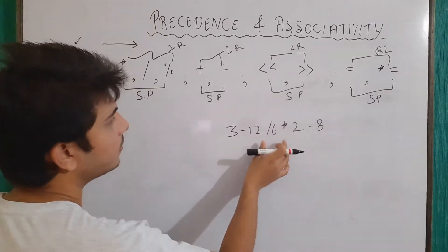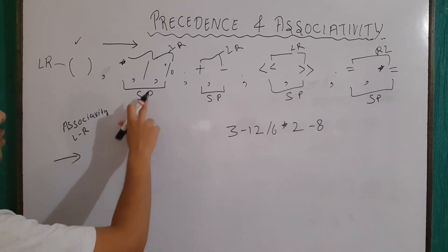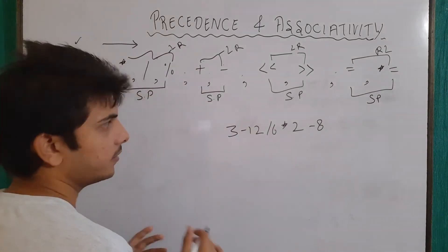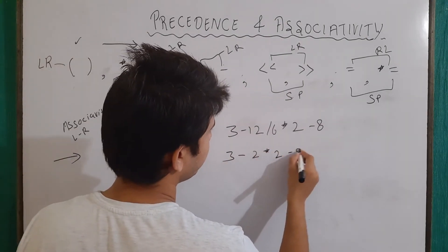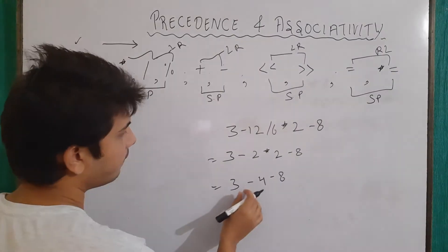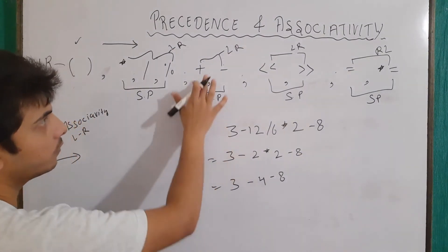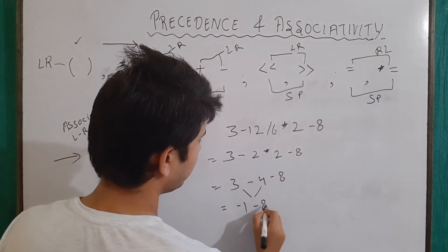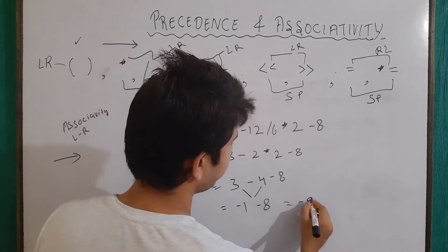Let's see another example. There is a conflict between the asterisk and division operator in terms of their priority; both have the same priority and left-to-right associativity. So the leftmost operator, 12/6=2, is evaluated first, then asterisk 2 gives 4, then minus 8. Now the highest priority is asterisk, so it becomes 3-4-8. We are left with two minus operators, both having same priority, so with left-to-right associativity, 3-4 gives minus 1 (this is a sign, not an operator), then minus 1 minus 8 gives final output minus 9.